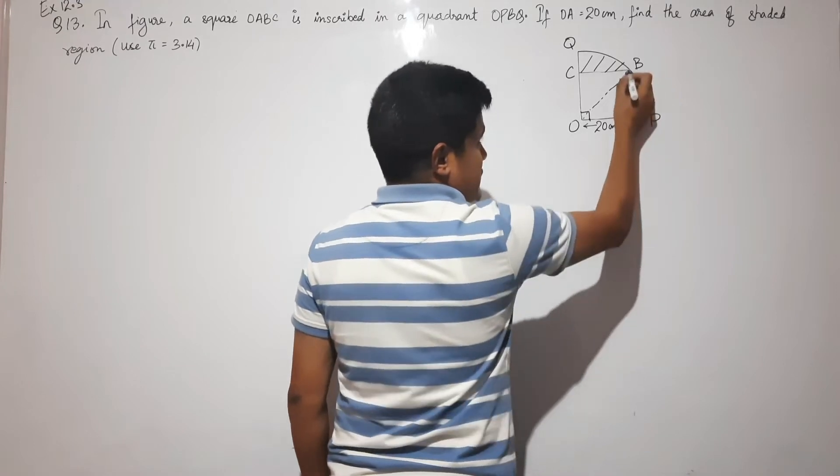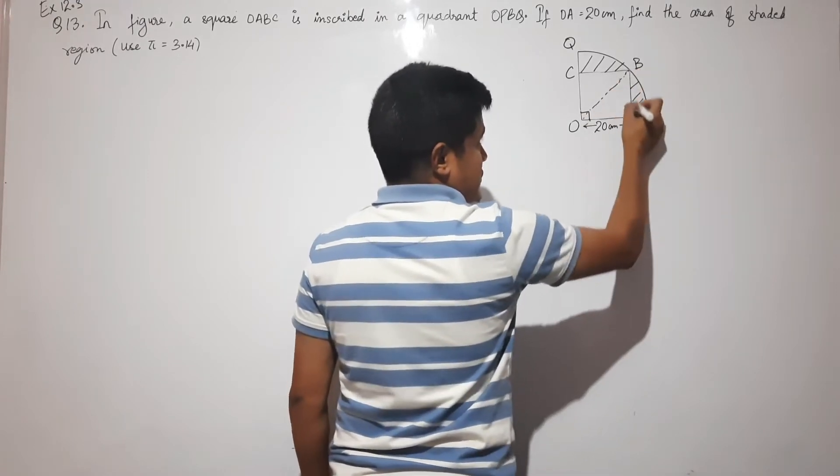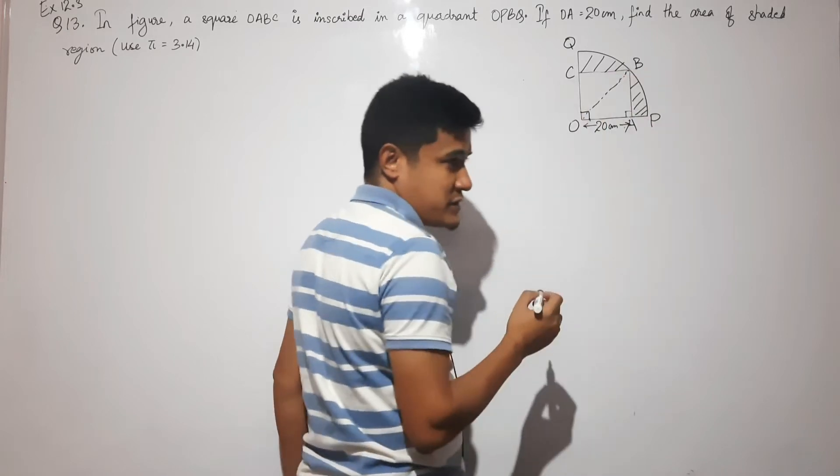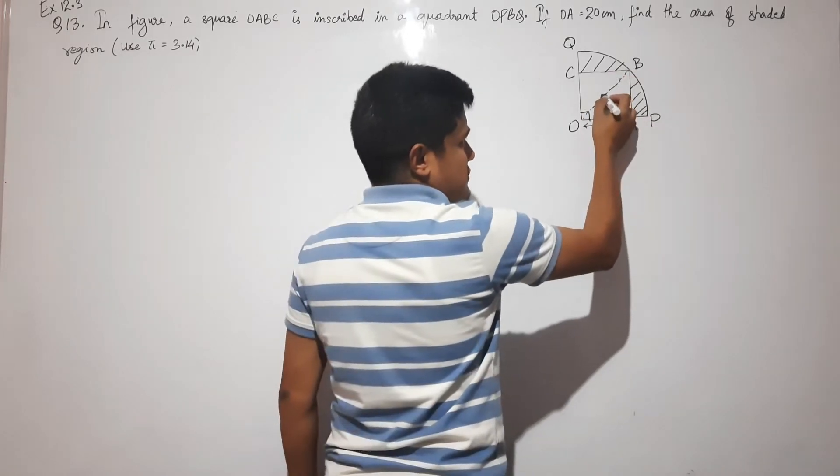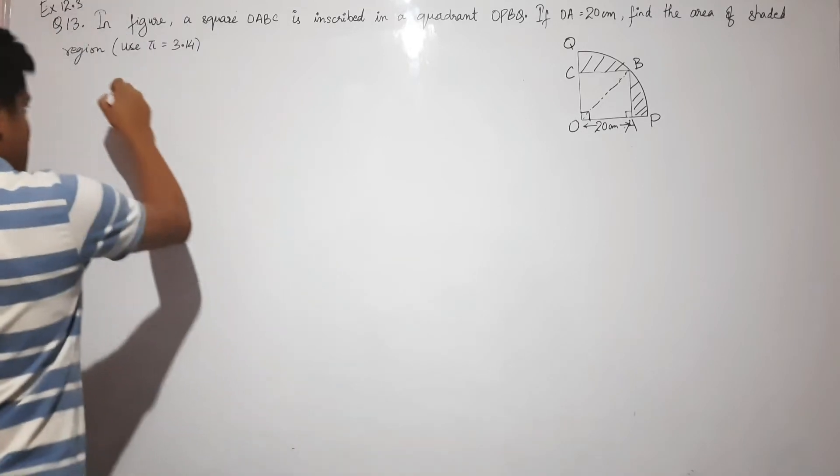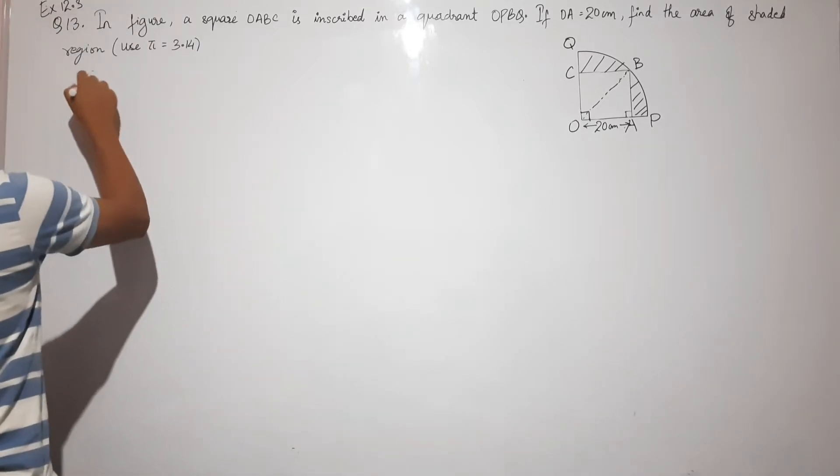This forms a right angle triangle, and by Pythagoras theorem, OB is the hypotenuse. So let us first find OB.